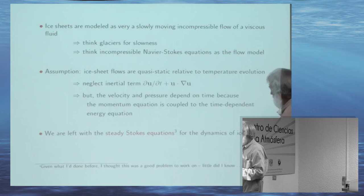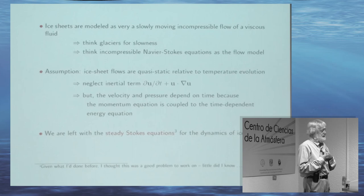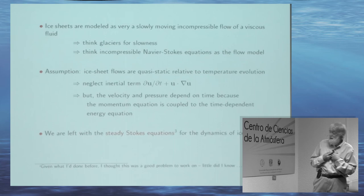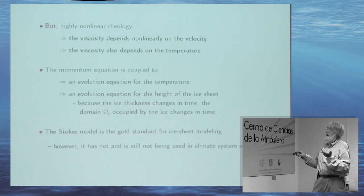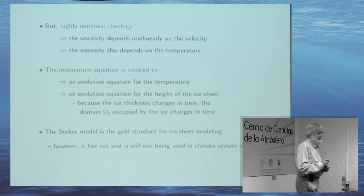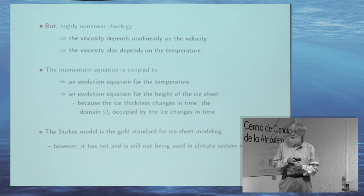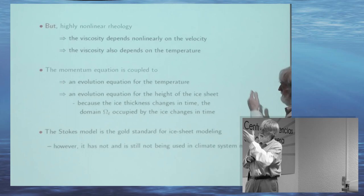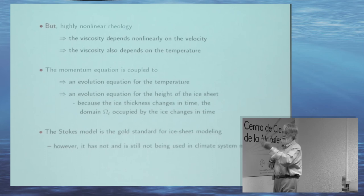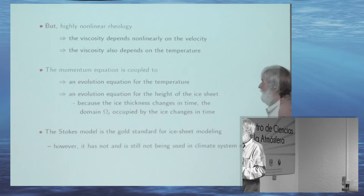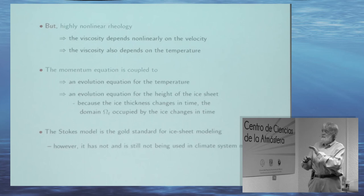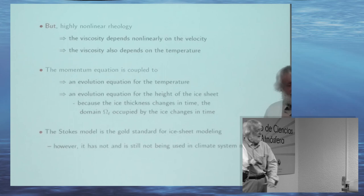This was good for me because I'm a finite element person, and I spent a lot of time on finite element methods for Navier-Stokes and Stokes equations. The viscosity is nonlinearly dependent on the gradient of the velocity and also the temperature. The momentum equation — this nonlinear Stokes equation — is coupled to an evolution equation for the temperature, and an evolution equation for the ice sheet height. That's the gold model. However, no one uses that model in climate system models — there are simplified models instead.